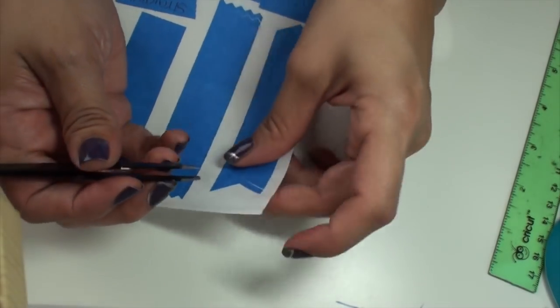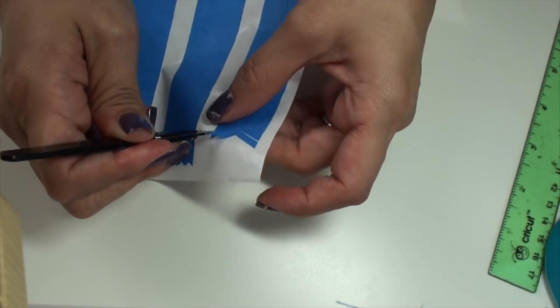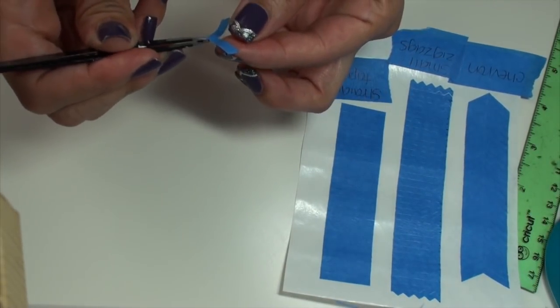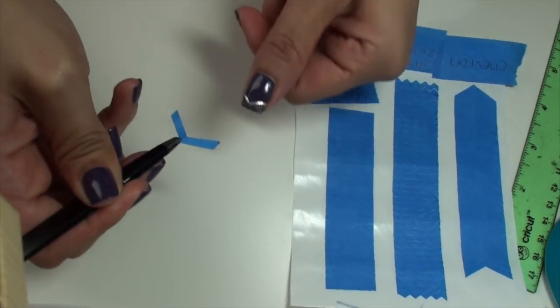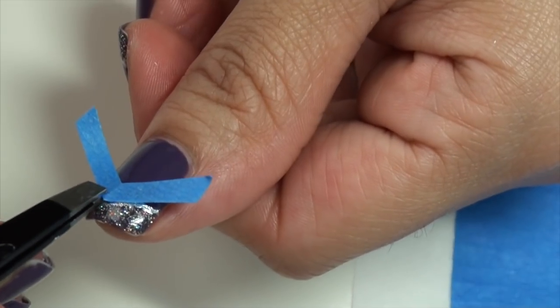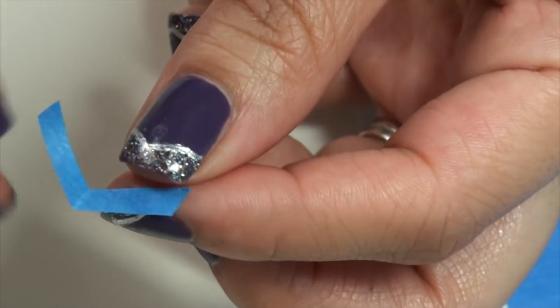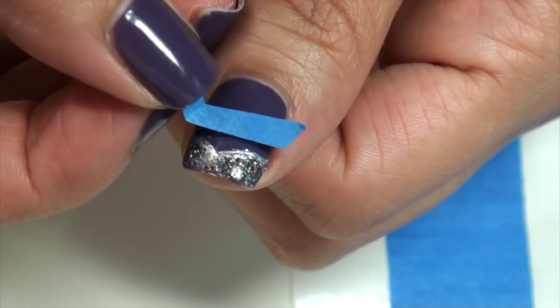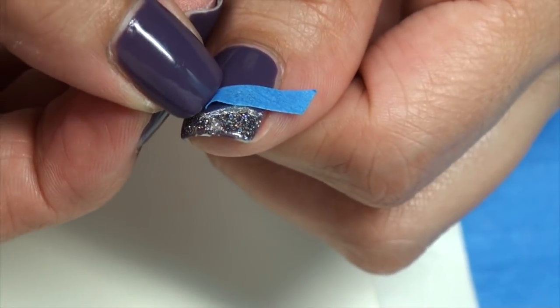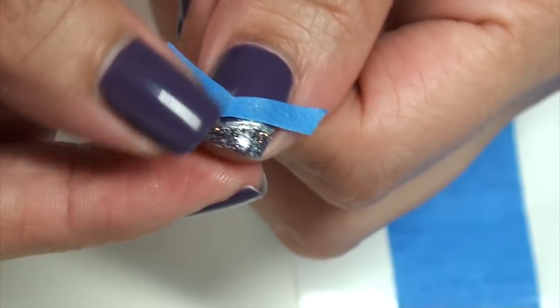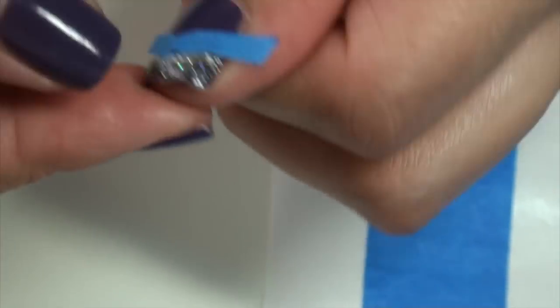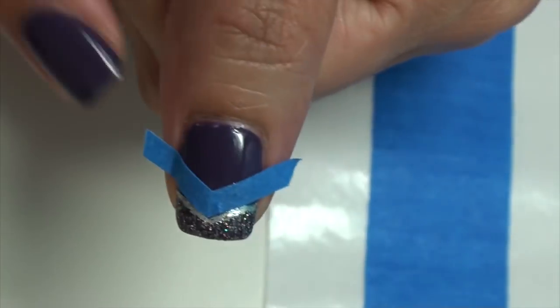So here you can see me using some tweezers to get one of the single chevrons up and off of this freezer paper. I'm going to try to use the tweezers to put them on my nail. So you can either use tweezers or your fingers. But you want to make sure you use them on dry nails and you're going to place them and push them into place, making sure that you get rid of any air bubbles or gaps so that when you paint polish over them, it doesn't seep underneath them and make it look sloppy.